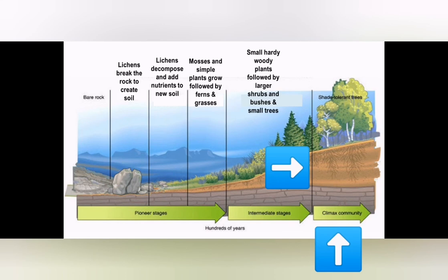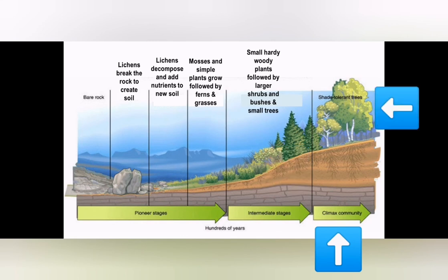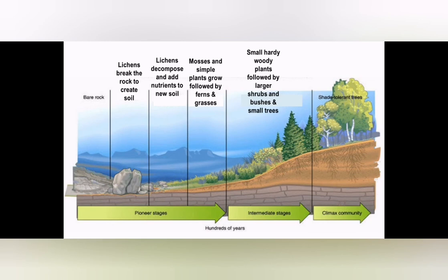That brings us to the climax stage, which is the ultimate stage. The ecosystem has now recovered completely, and we will see big plants, big trees, and mature plants. Primary succession takes a very, very long time — it can take centuries to recover after a volcanic eruption because the hardest job is breaking the rock and producing soil. Once all the plants have come in, small animals arrive first and bigger animals follow.